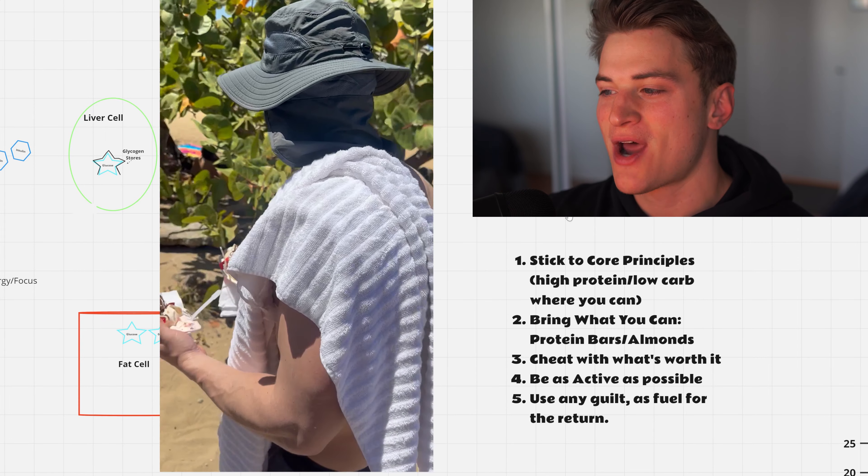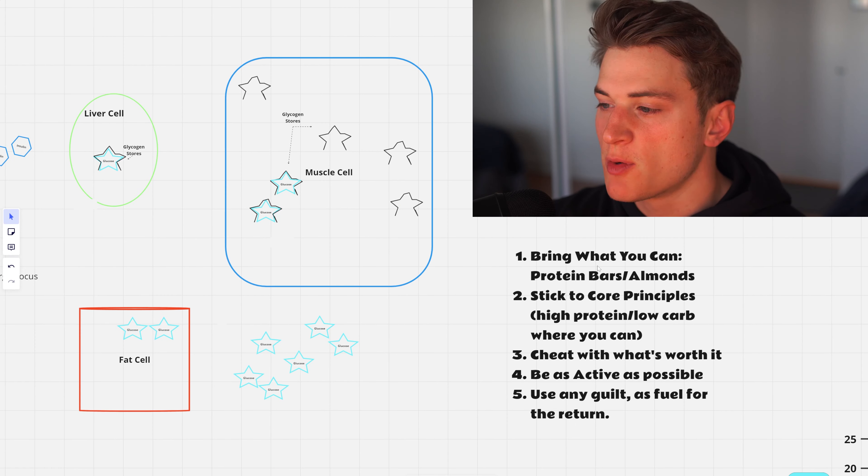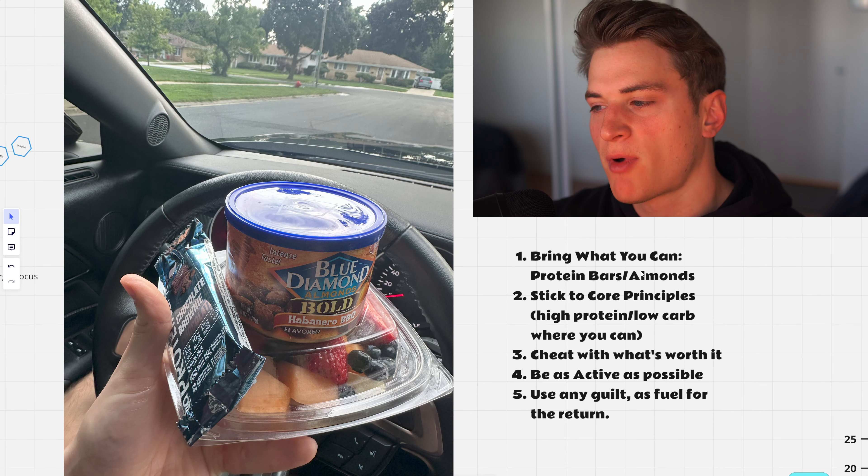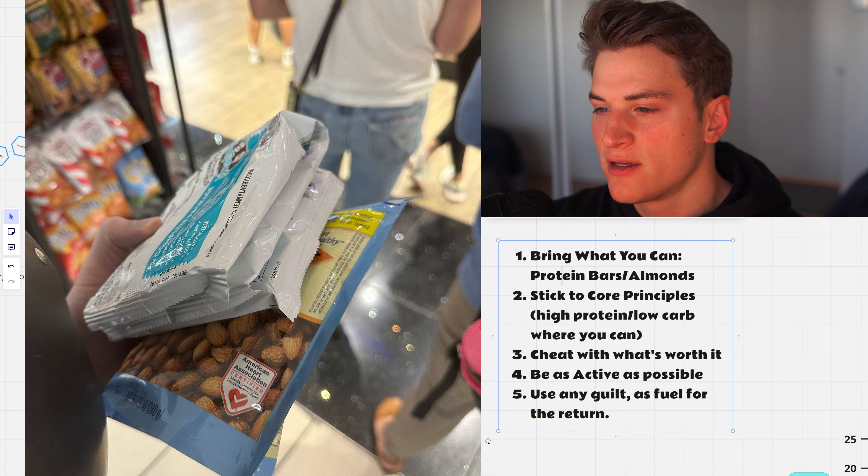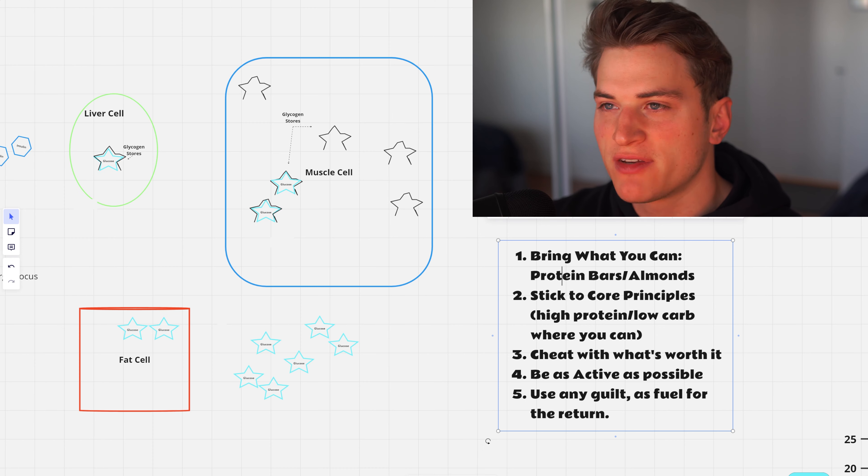So bring what you can. I bring an assortment of protein bars in my carry-on and spicy almonds - I think they're called habanero barbecue or something like that. Right in the beginning when you go to the airport you have snacks already in line with your goals. You don't have to spend a ton of money on overpriced food there.